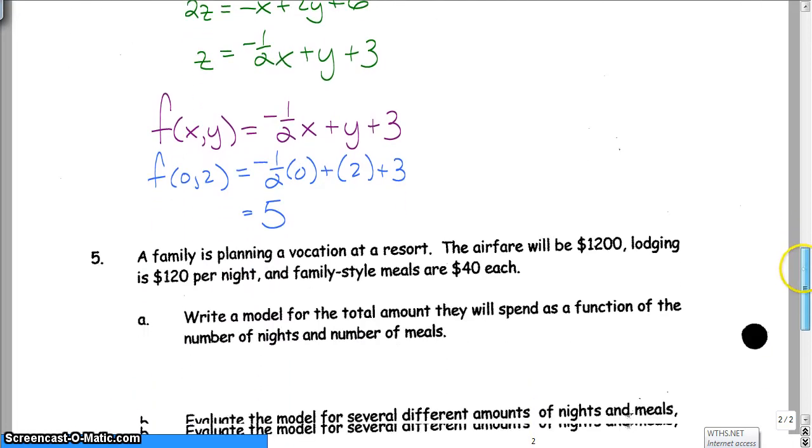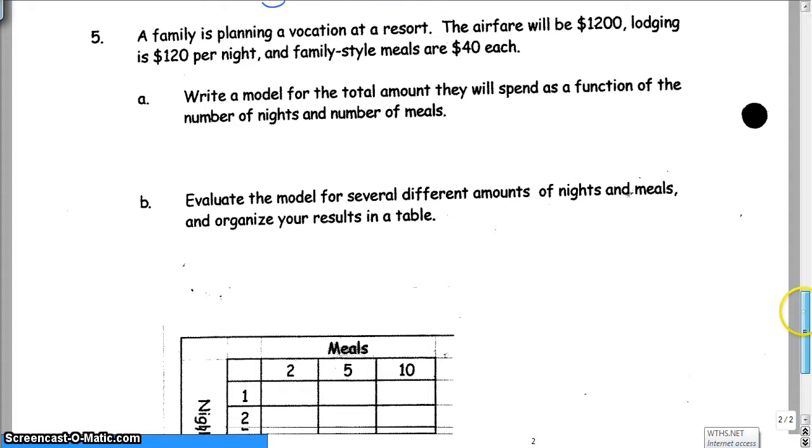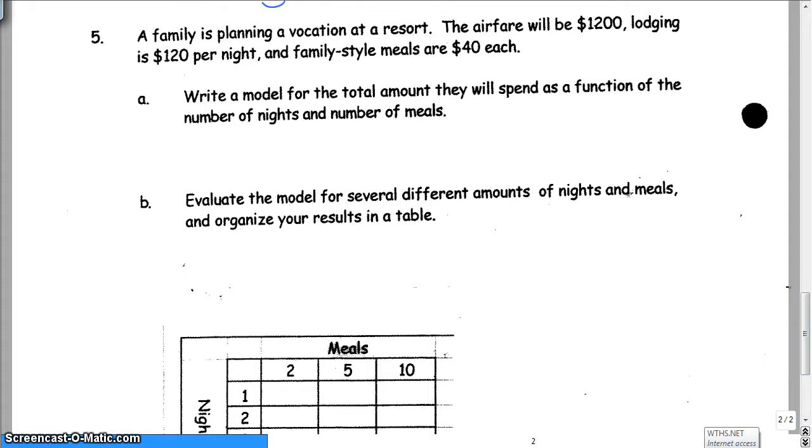Now the last question in the notes today is about planning a vacation to a resort. And we have airfare that's going to be $1,200. Lodging is $120 per night. And family style meals are $40 each. Okay, so what you want to do here is you want to read this carefully and write a model for the total amount they're going to spend based on the number of nights and number of meals and stuff like that. So go ahead and pause and try it.